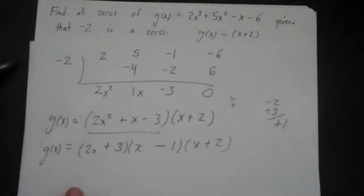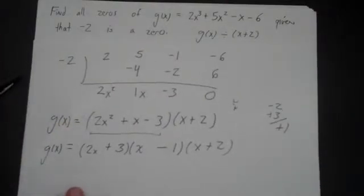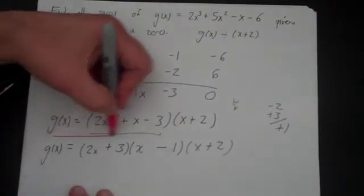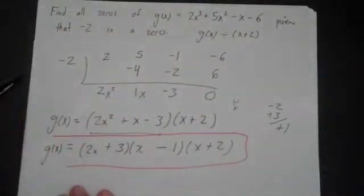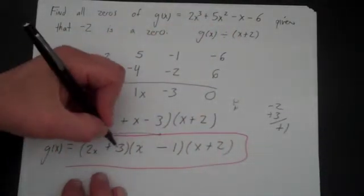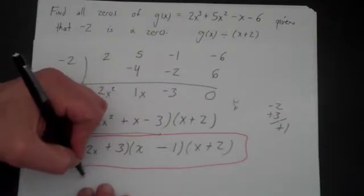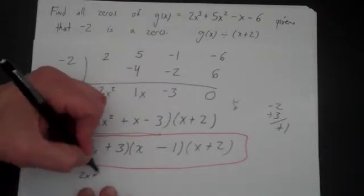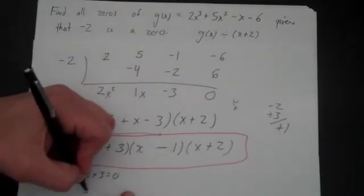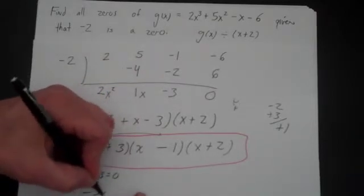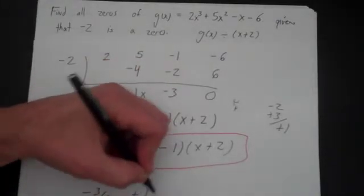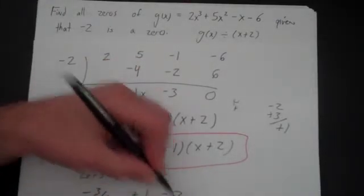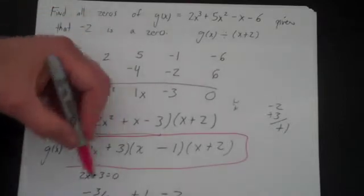So this is my complete linear factorization. This was just like the last example, but here I want the zeros. The zeros are: set 2x + 3 equal to 0 — that's minus 3/2; and positive 1 and minus 2. Those are my three zeros.